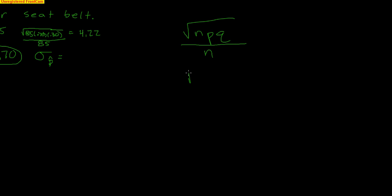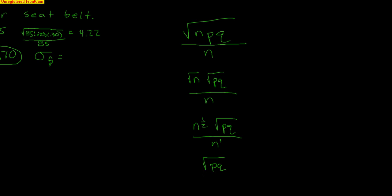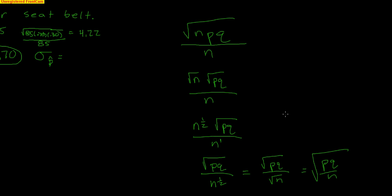To find the proportion from how many, you divide by N. I want to show you a cleaner formula. Starting with √(npq), I'll break the top apart. This is n^(1/2) times √(pq) divided by n. Since I have common bases, I subtract the exponents: 1/2 minus 1 is negative 1/2. A negative exponent moves to the bottom as positive 1/2, which is a square root. So we get √(pq/n) — a giant square root around pq divided by n.